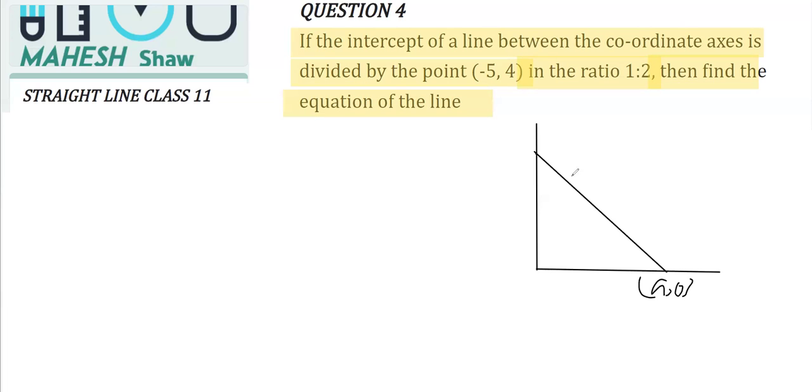I have made a Cartesian plane, and this is (a, 0) and this has to be (0, b). There is a point P which divides this—the point coordinate is this—this divides the intercept.